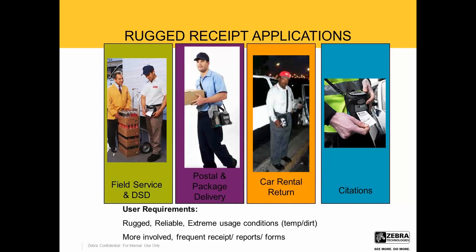Some rugged receipt applications for the RW: direct store delivery for beverage companies, food, snacks, dairy, bakeries, field service for housewares and appliances repairs, citations for cities, universities, meters, quad cars to give a quick ticket. And of course, if anybody's rented a car, you may have noticed the car rental employee provides you with a receipt when you return your car using their mobile printer, which makes it quick and easy since we're often in a hurry to catch our flight.